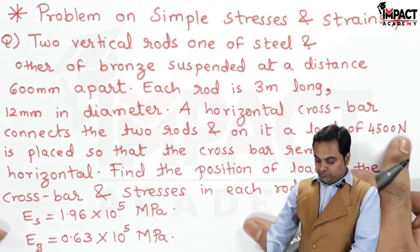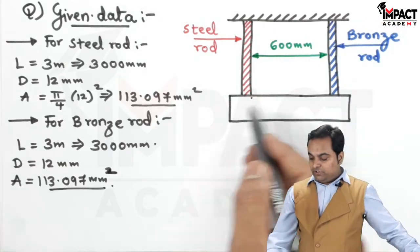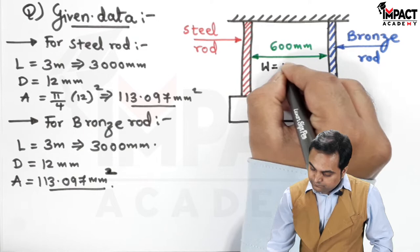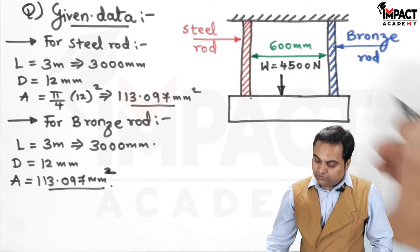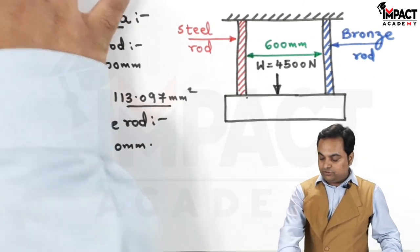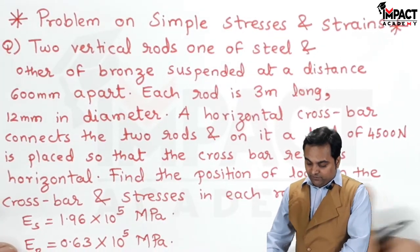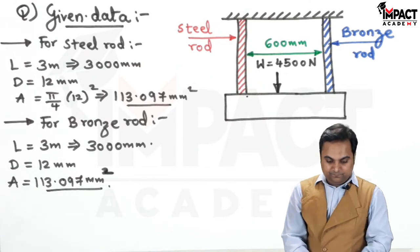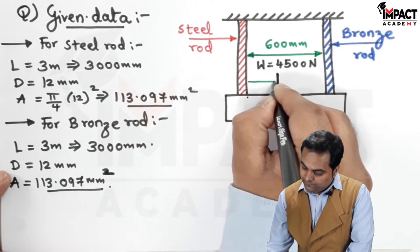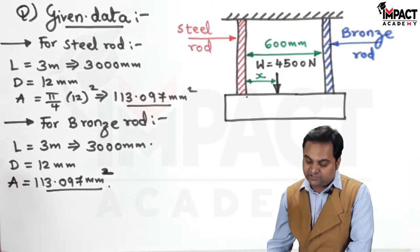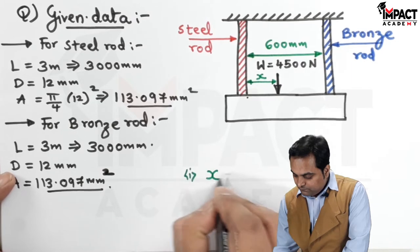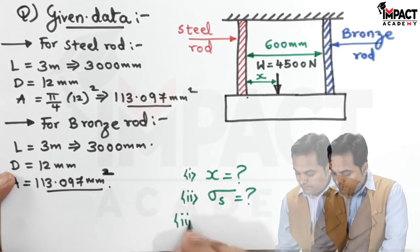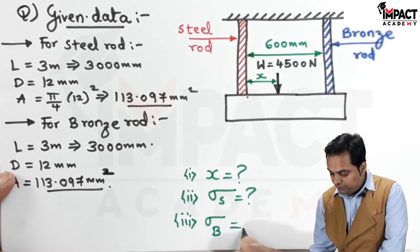A horizontal crossbar connects the two rods, and on it a load of 4500 newton is placed so that the crossbar remains horizontal. We have to find the position of the load on the crossbar and the stresses in each rod. The distance from the left-hand side is called x, which we have to calculate. The stress in the steel rod and the stress in the bronze rod are denoted by σ_s and σ_b respectively.